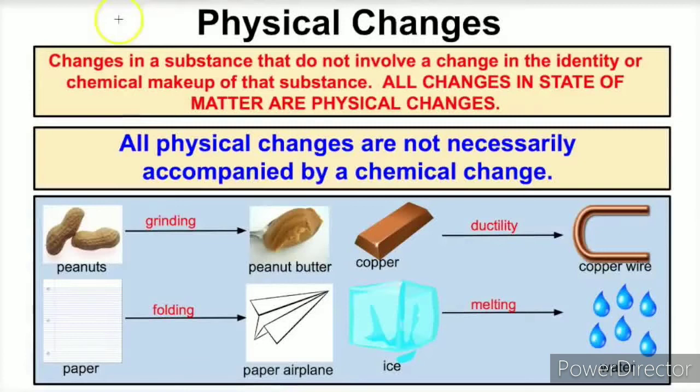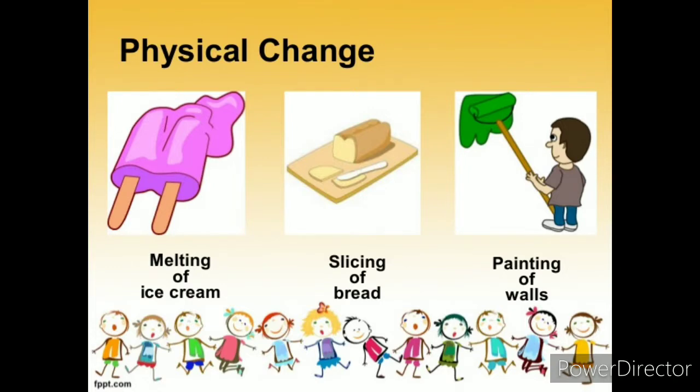In physical changes, the shape, size, color, or temperature of a substance can change. Usually, physical changes are reversible.